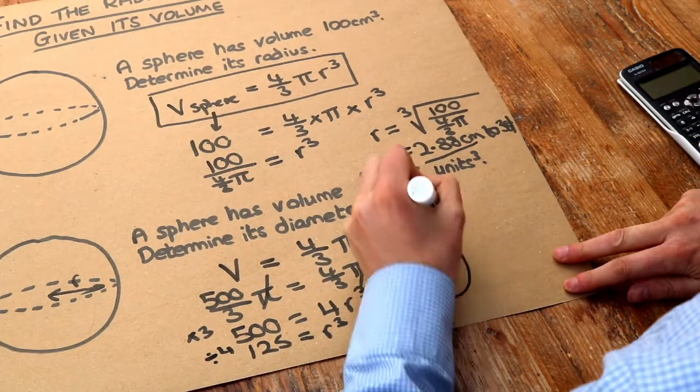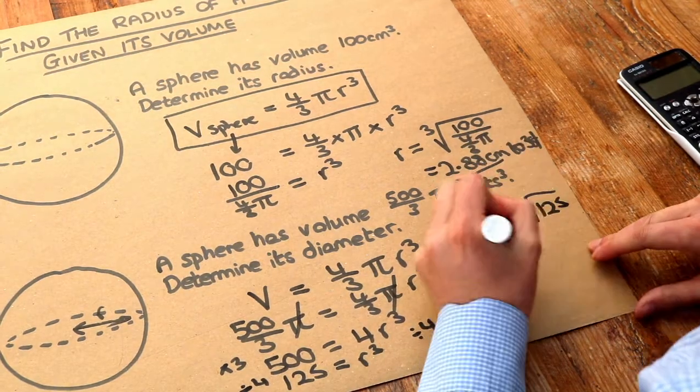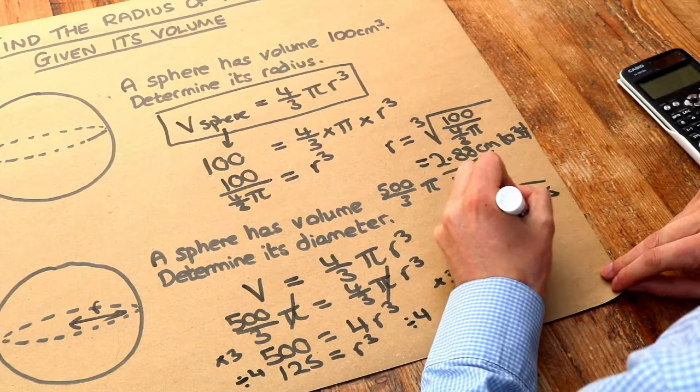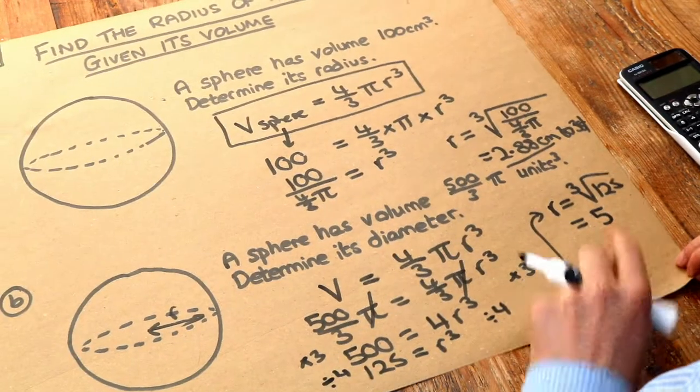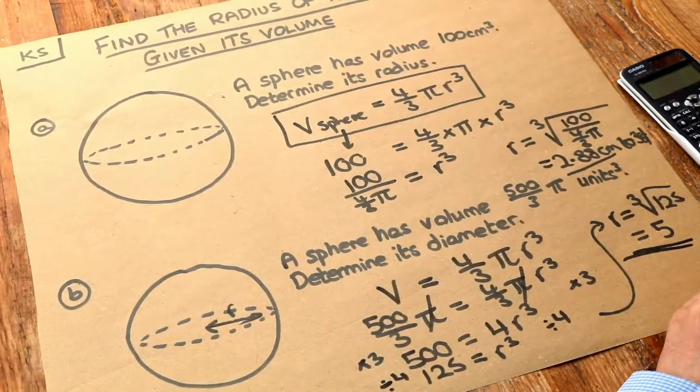So let's do that up here because I've run out of space. r is the cube root of 125. Now conveniently 125 is a cube number, so we just get five. And there's no units here, that just says units cubed, so five will do. And that is the final answer.